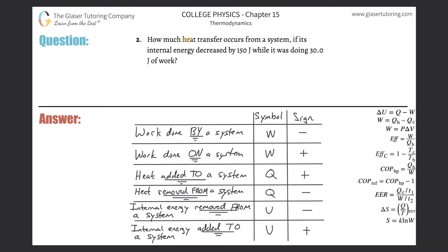Number two, how much heat transfer occurs from a system if its internal energy decreased by 150 joules while it was doing 30 joules of work? All right. So first thing, here's a table. We got to memorize it.